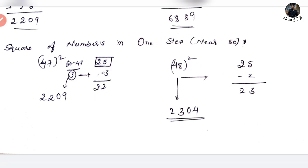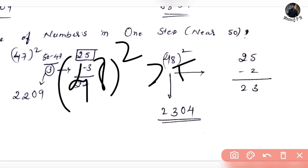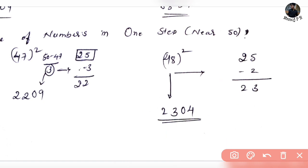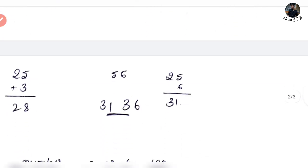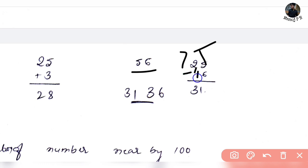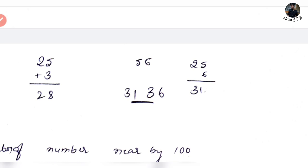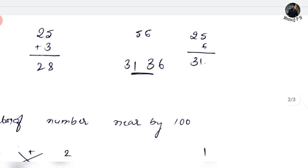48 squared: take a look at this. It's 50 and the difference is 2. So 25 minus 2 is nothing but 23. Then 2 squared is 4, so it's 04. Therefore 48 squared is 2,304. That is your answer. So this is a simple 3-step trick to find out a square — because in traditional multiplication, you will spend a lot of time.